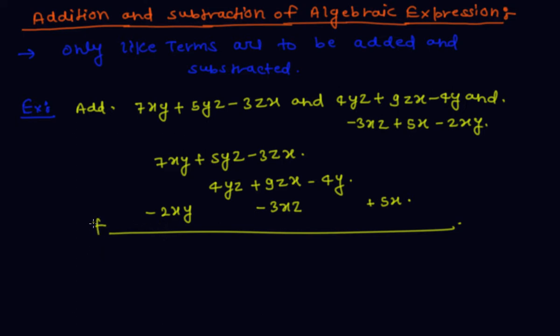Now add these three terms. 7xy minus 2xy is 5xy plus 5yz plus 4yz equals 9yz. In third, 9zx minus 3zx minus 3xz equals plus 3zx minus 4y plus 5x. So this is the required answer.